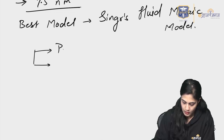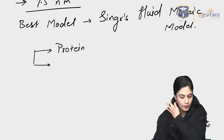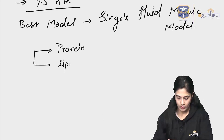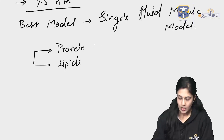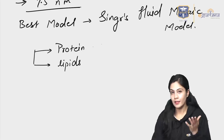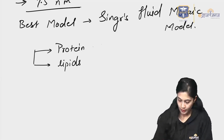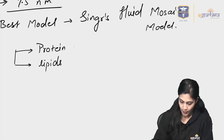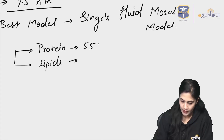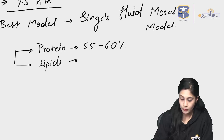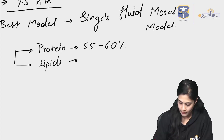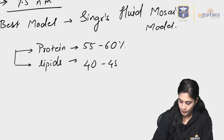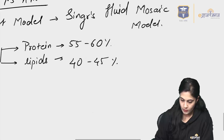What is the cell membrane majorly made up of? Proteins and lipids. Outside of that, carbohydrates are attached, but we are not going into carbohydrates for now. You should know that the majority — 55 to 60 percent — is protein. Remember, it is not lipids; it is protein. And 40 to 45 percent are lipids.